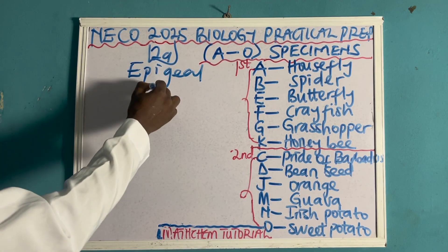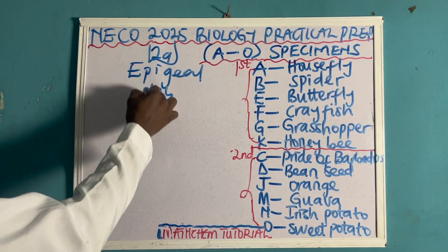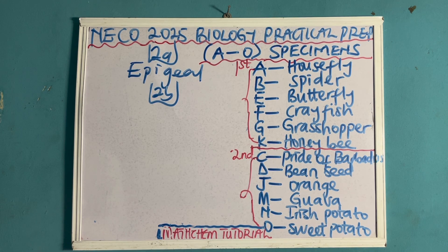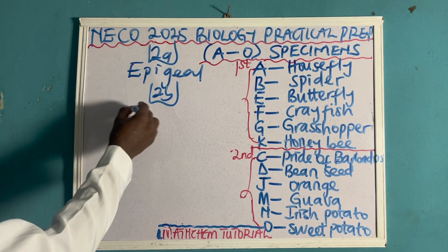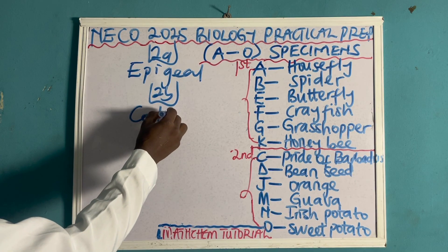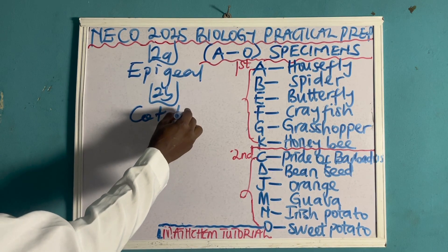Another question they can ask — let me name that 2B — is to state the food storage organ in specimen D, which is the bean seed. The food storage organ in specimen D is the cotyledon.